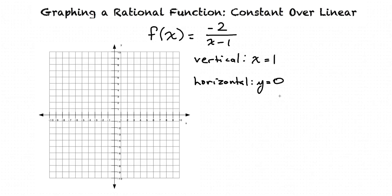So we will now draw our two asymptotes. They will be dotted lines. Our vertical asymptote is at x equals 1, so we have a dotted line going along the line x equals 1. And then we have a horizontal asymptote at y equals 0, which is just the x-axis.